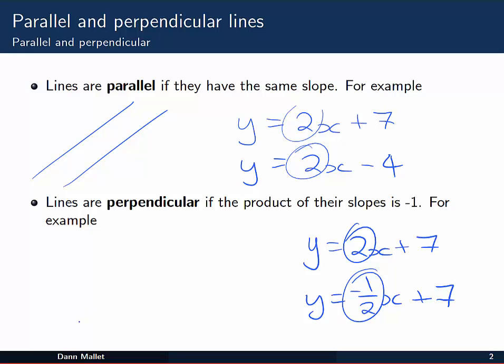In everyday terms, perpendicular lines are ones which intersect at right angles. Another way to check for right angles is to look at the slopes and multiply them together. If you get minus 1, then there's a right angle where they intersect.